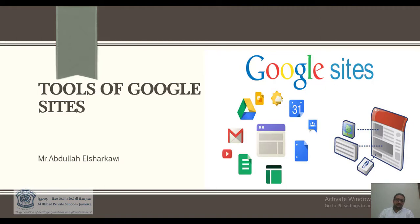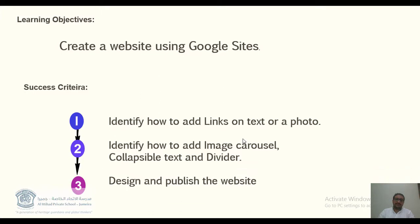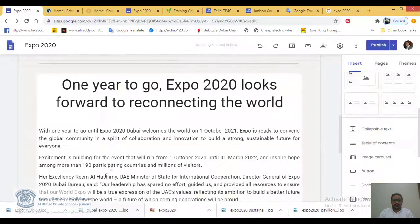Our objective for today is to create a website using Google Sites. Our success criteria: first, identify how to add links on text or a photo — links to another website. Second, identify how to add image carousel and collapsible text and divider. Then we're going to design and publish the website.